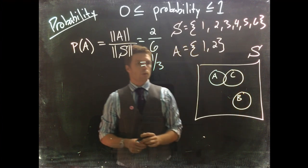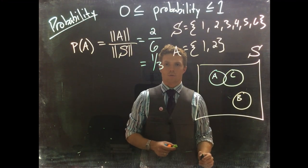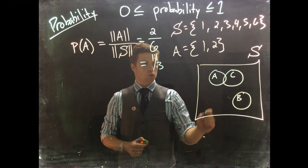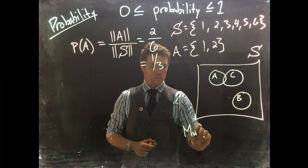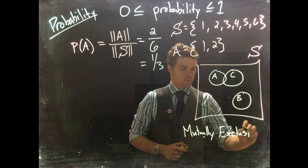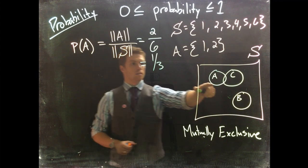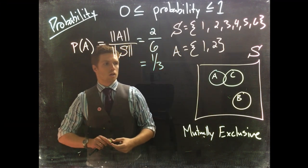We notice how A and B do not overlap, so if they don't overlap they're mutually exclusive. A and C are not mutually exclusive because they have an intersect region.